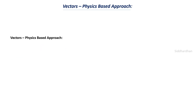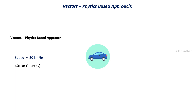The first is the physics-based approach. Let's say there is a car and we want to measure a physical quantity. The speed of the car — say 50 kilometers per hour — is a scalar quantity because we don't mention the direction, just the magnitude. Whereas velocity is 50 kilometers per hour in the north direction, which includes both magnitude and direction, making it a vector quantity.